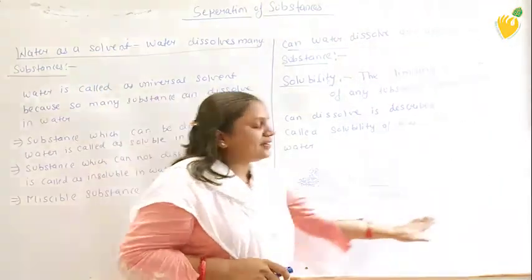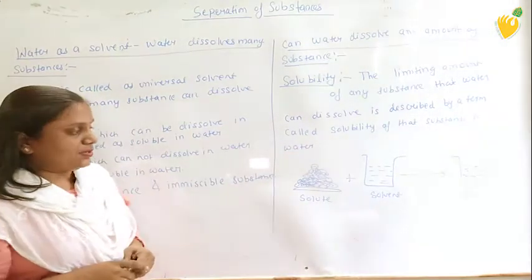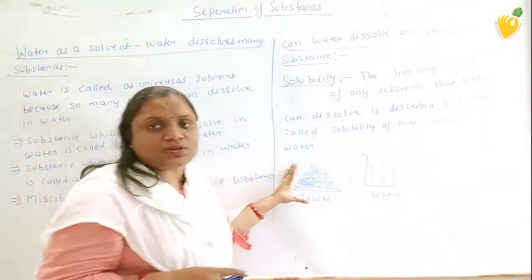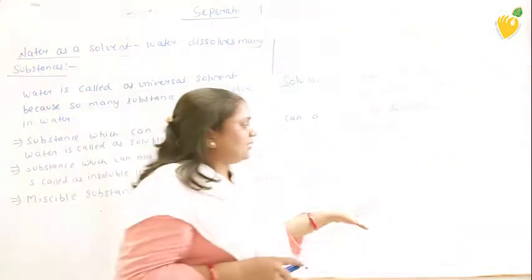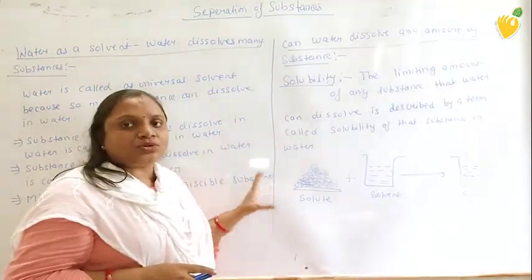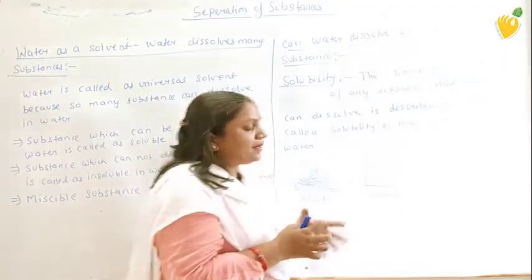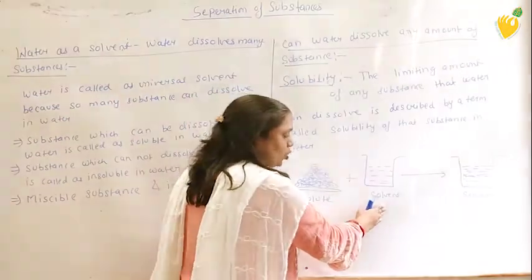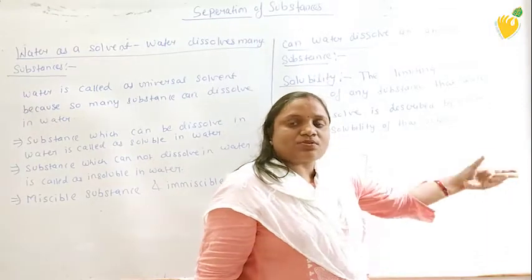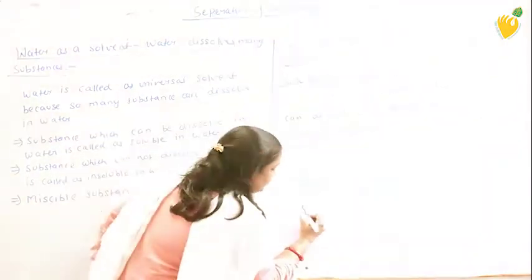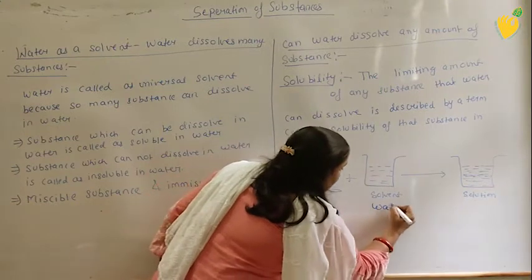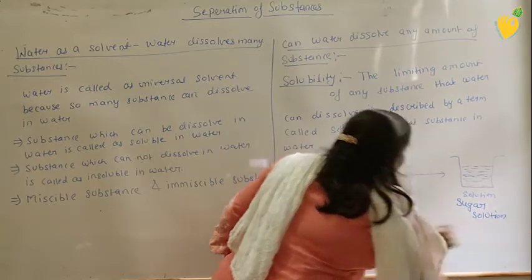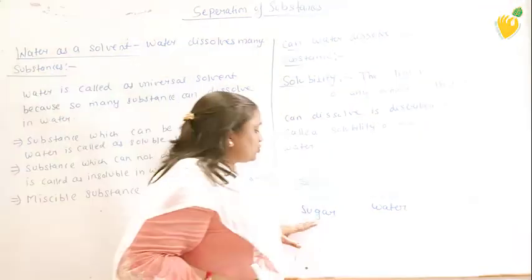Now I will tell you about solute, solvent, and solution. Solute means the solid substance which you dissolve in a liquid — it is the portion present in the least amount. Solvent means the liquid part, which is in a larger amount. When the solute is mixed with the solvent, the clear solution formed is called a solution. For example, sugar dissolved in water forms a sugar solution.